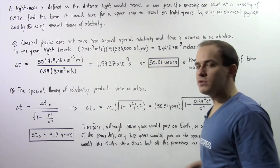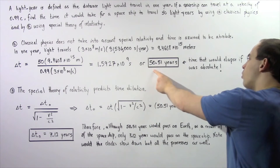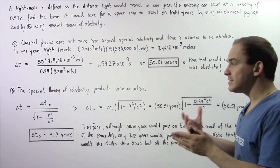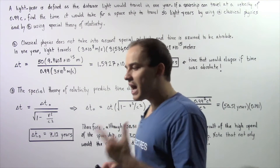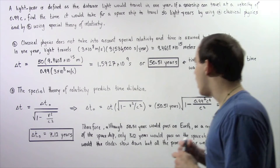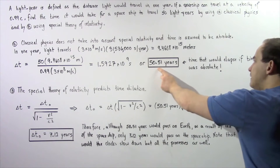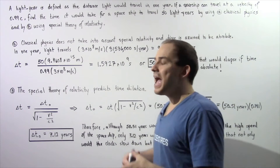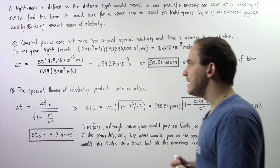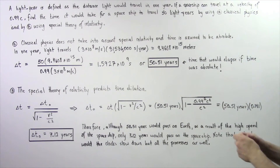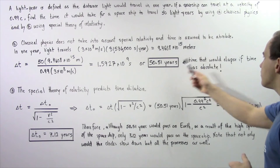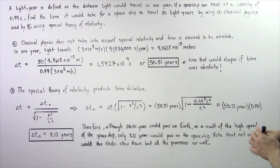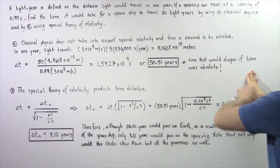This is equivalent to about 50.51 years. Assuming classical physics — where time is an absolute quantity — 50.51 years would pass on the spaceship and 50.51 years would pass on Earth. This is the time that would elapse in both frames because we are assuming time is absolute.